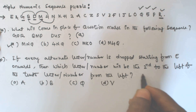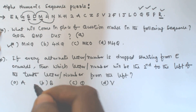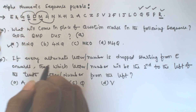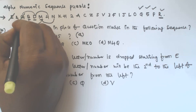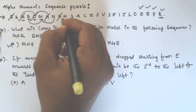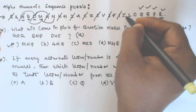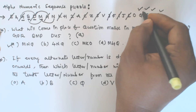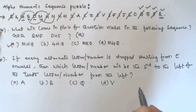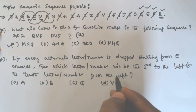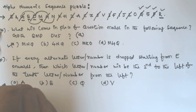For the second question: every alternate letter or number is dropped starting from E onwards. So we drop E, and keep: G, D, 4, K, 2, C, S, 3, 1, L, Q, P, and so on. Now we need to find the tenth from the left, and then the second to the left of that tenth.